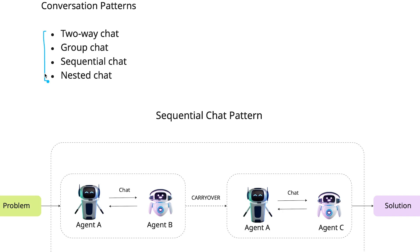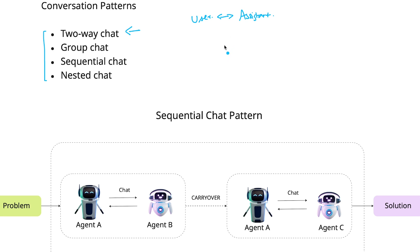The very first two conversational patterns we already have dealt with in a couple of our previous sessions. The two-way chat is the most simplistic agentic workflow which typically involves a couple of agents, preferably a user proxy agent and an assistant agent, that converse with each other and try to solve a specific problem. We have practically implemented the same in one of our earlier sessions.